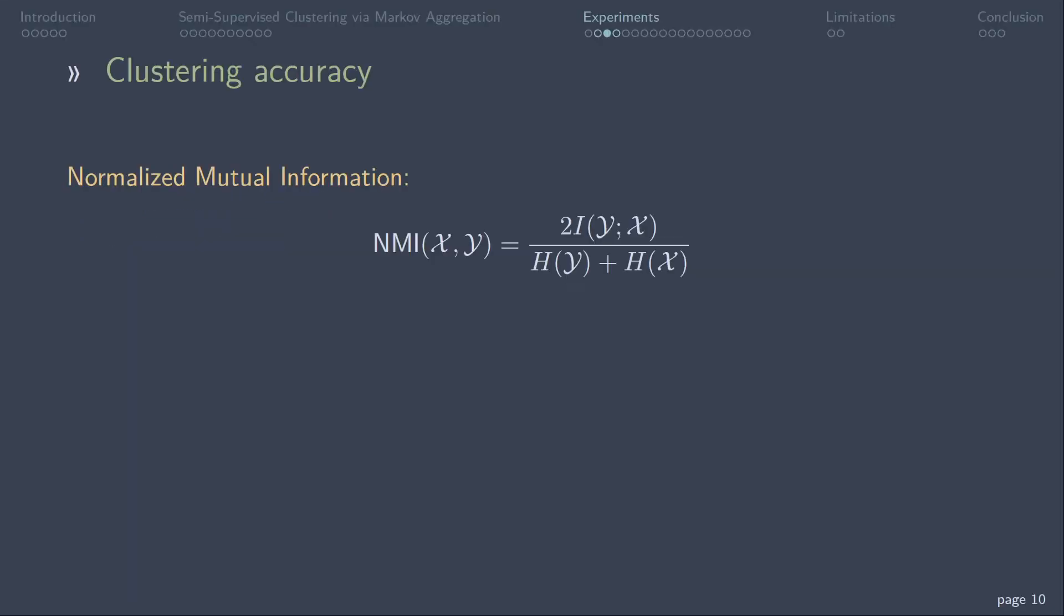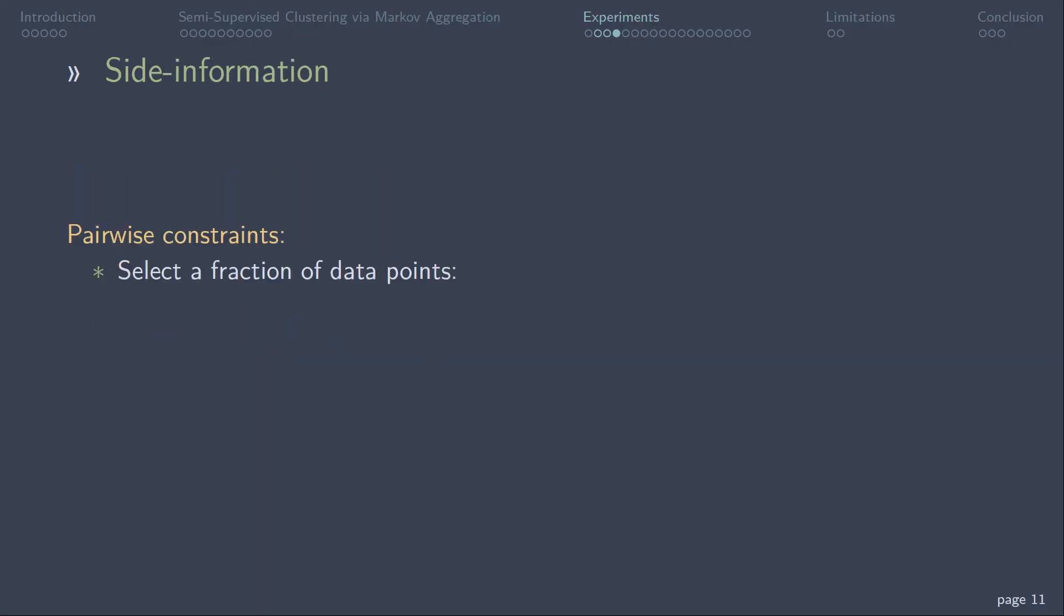In order to measure the accuracy of the clustering results, we use the normalized mutual information that is defined as such, where curly X is the true partition and curly Y the estimated partition. A value of 0 indicates no mutual information, a value of 1 indicates identical partitions. The pairwise constraints are generated from labeling a fraction of data points. We average the results for 10 different runs.